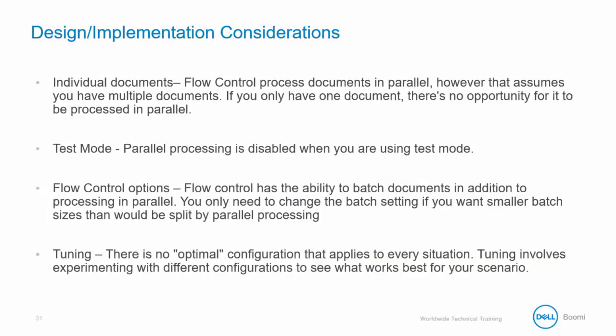There are several design and implementation considerations. First, in process design, flow control processes documents in parallel. However, that assumes that you have multiple documents. If you only have one document, there is no opportunity for it to be processed in parallel. Parallel processing is disabled when you are using test mode. There are some flow control options you should be familiar with. Flow control has the ability to batch documents in addition to processing in parallel.